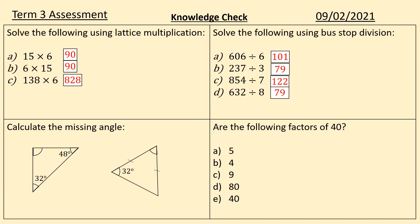The bus stops answers are here. The missing angles, we needed the difference. And then with this one we could see that the two base angles were going to be 32 and the remainder was going to be at the top. And are the following factors of 40? The trick there, particularly, was D, because that's a multiple of 40, it's the 40 times table, but it's not a factor of 40. If you divide you will not get an integer.